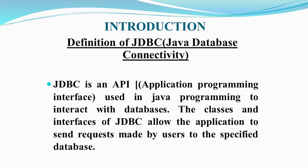Continuing the introduction — what is the definition of JDBC, that is Java Database Connectivity? JDBC is an API — Application Programming Interface — to interact with the databases. The classes and interfaces of JDBC allow the application to send requests made by users to the specified database. Whether the user wants to query data or save something in the database, JDBC is used for both operations.